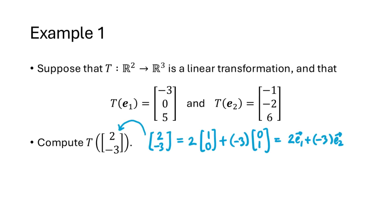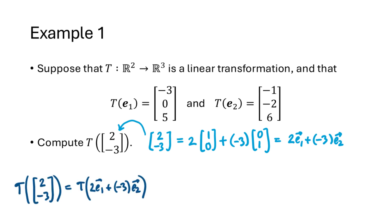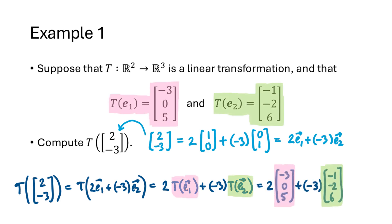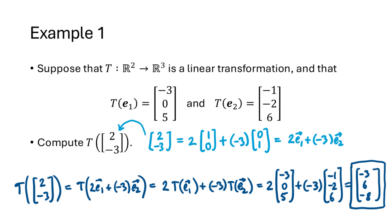The trick is to realize that we can take the vector (2,-3) and break it up in terms of e1 and e2. We rewrite it as 2e1 plus (-3)e2. So t(2,-3) equals t(2e1 + (-3)e2), which by linearity equals 2t(e1) + (-3)t(e2). Substituting our known values, we compute the result: (-3, 6, -8).